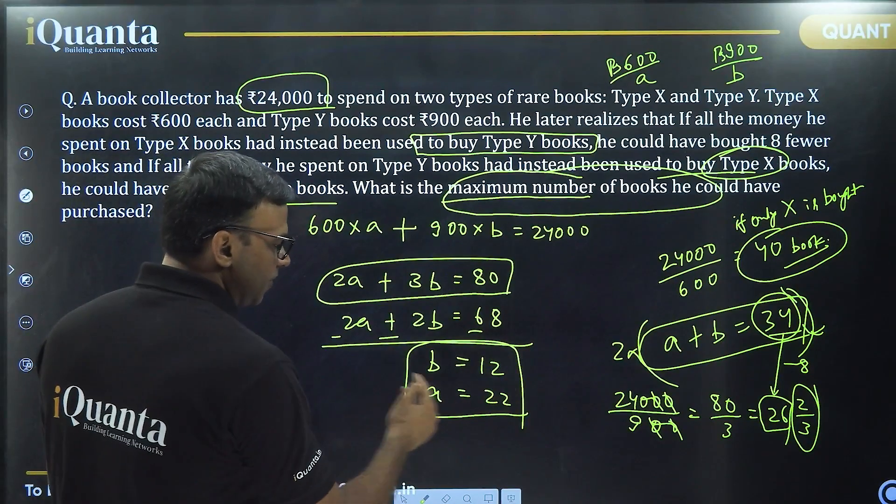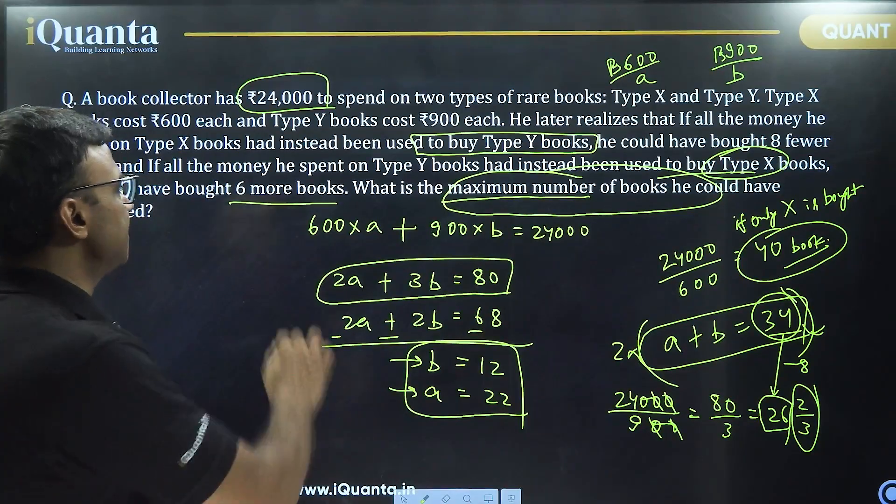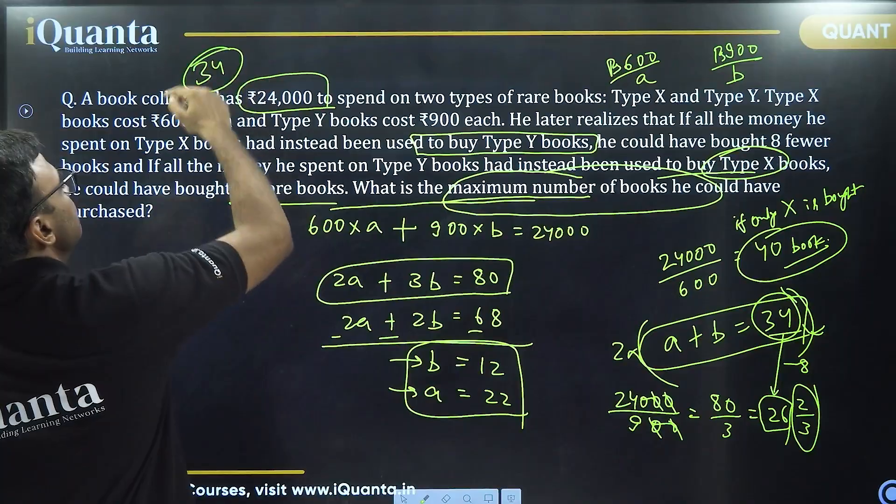The validity of 34 is this. We are getting definite number of books for each one of them. So in any case, the answer to that question is the maximum number of books that he can buy is 34. As simple as that.